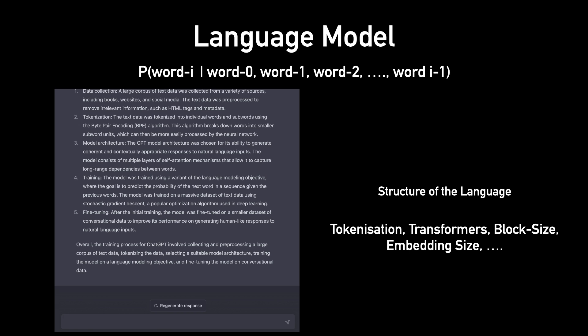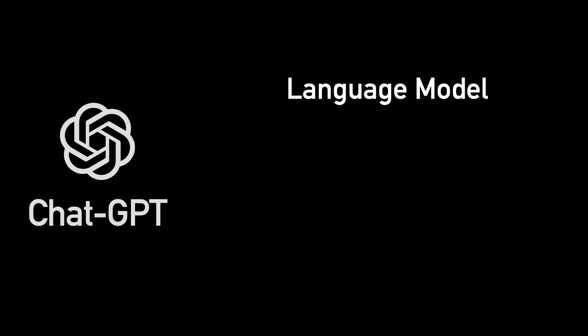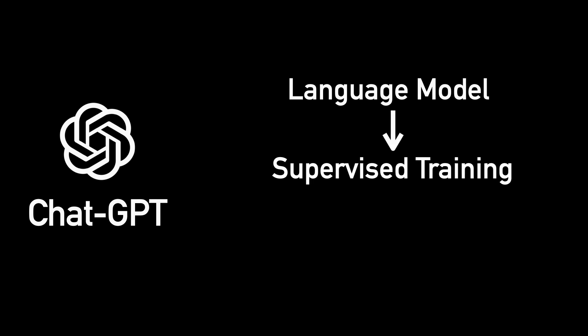So what makes ChatGPT a conversational model rather than a next word predictor? To make ChatGPT a conversational model rather than a next word predictor that we have right now, we fine-tune our language model using supervised training.